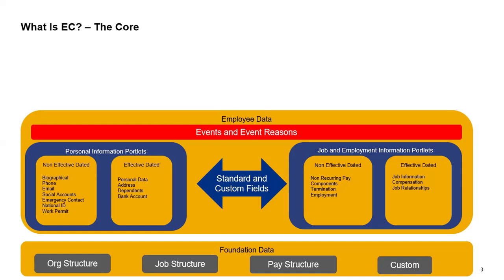Now let's talk about non-effective and effective data. Non-effective data means your biographical information, phone, email, or social accounts - these will not change with date. Effective data includes personal data, address, dependents, and bank accounts - these are the effective data items in personal information. In job information, we have non-recurring pay components and determination, plus employment information.